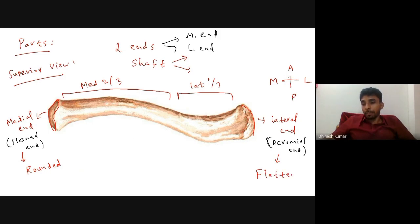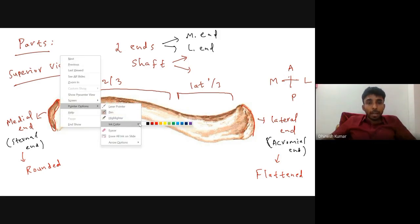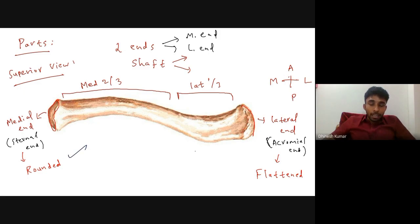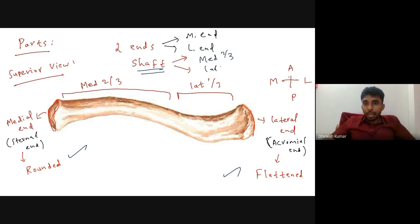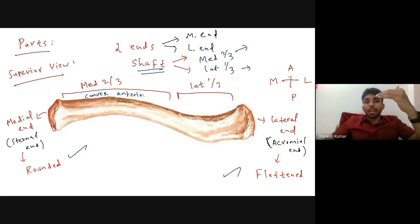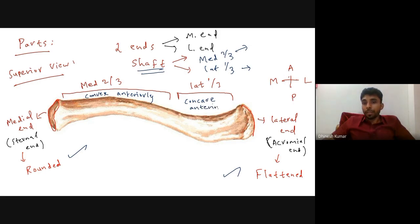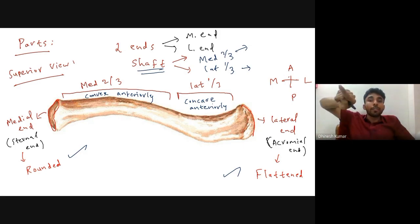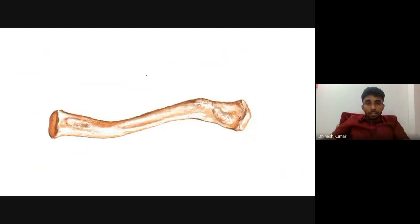This is one important identification point for side determination of the clavicle — the medial end is rounded whereas the lateral end is flattened. Regarding the shaft: the medial two-thirds of the clavicle is convex anteriorly, whereas the lateral one-third of the clavicle is concave anteriorly.